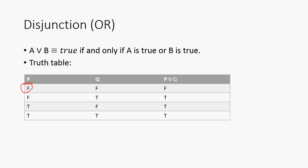right here, P is false, Q is false, then P or Q is false. But for all other cases, since at least one value is true, P or Q evaluates to true.